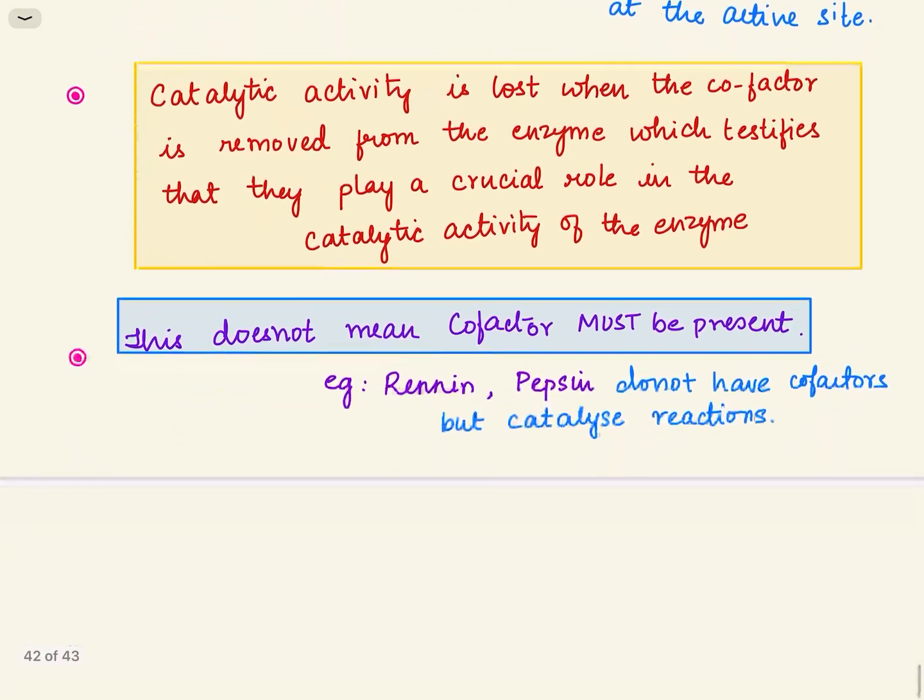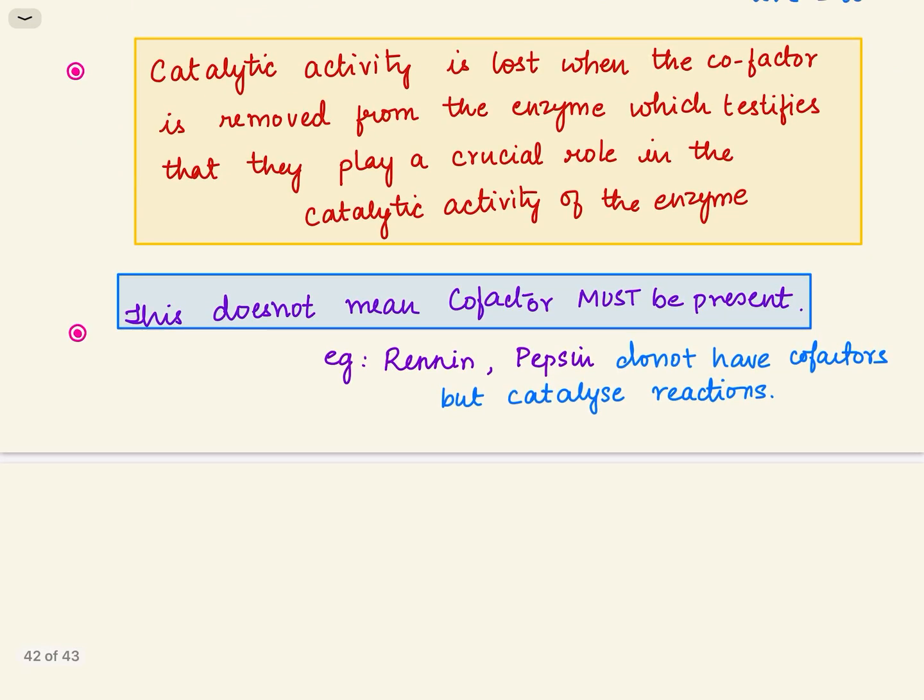Catalytic activity is lost when the cofactor is removed from the enzyme, which testifies that they play a crucial role in the catalytic activity of the enzyme. But this does not mean cofactor must be present. Some enzymes can function only as proteins but some enzymes have protein part as well as non-protein part.